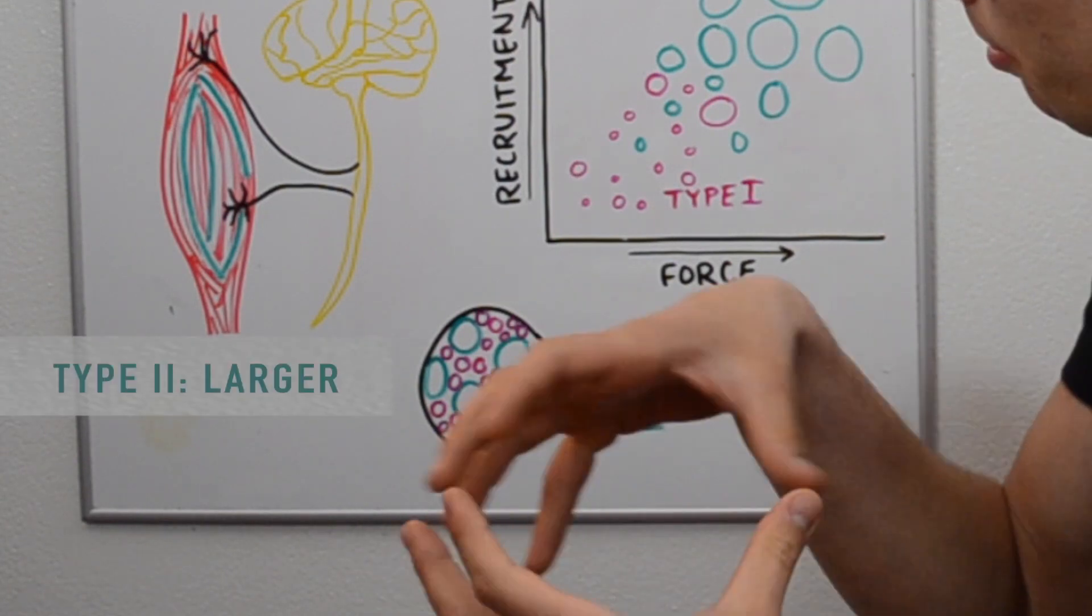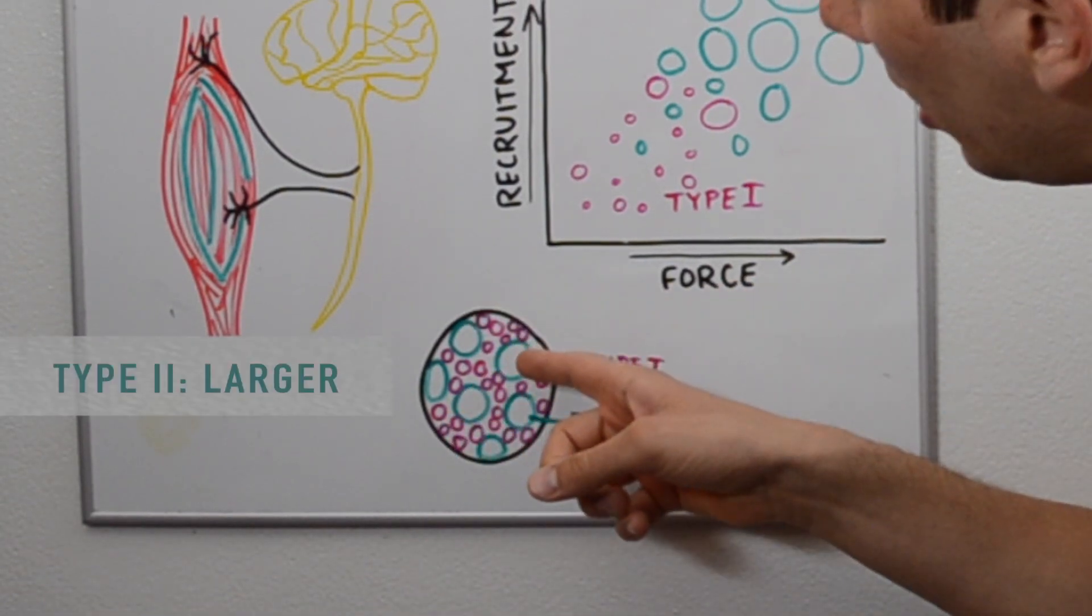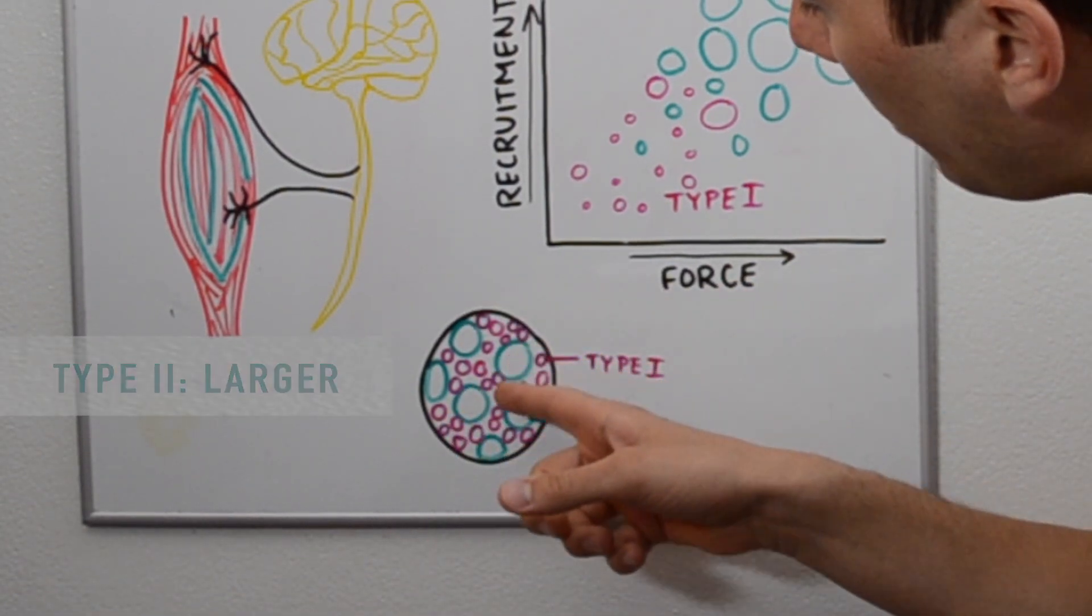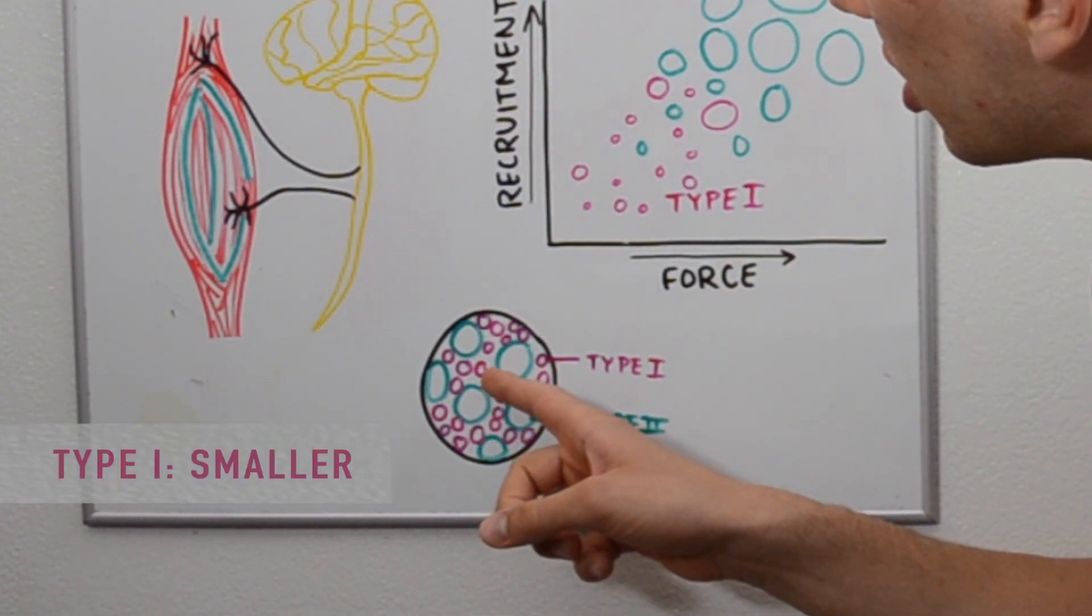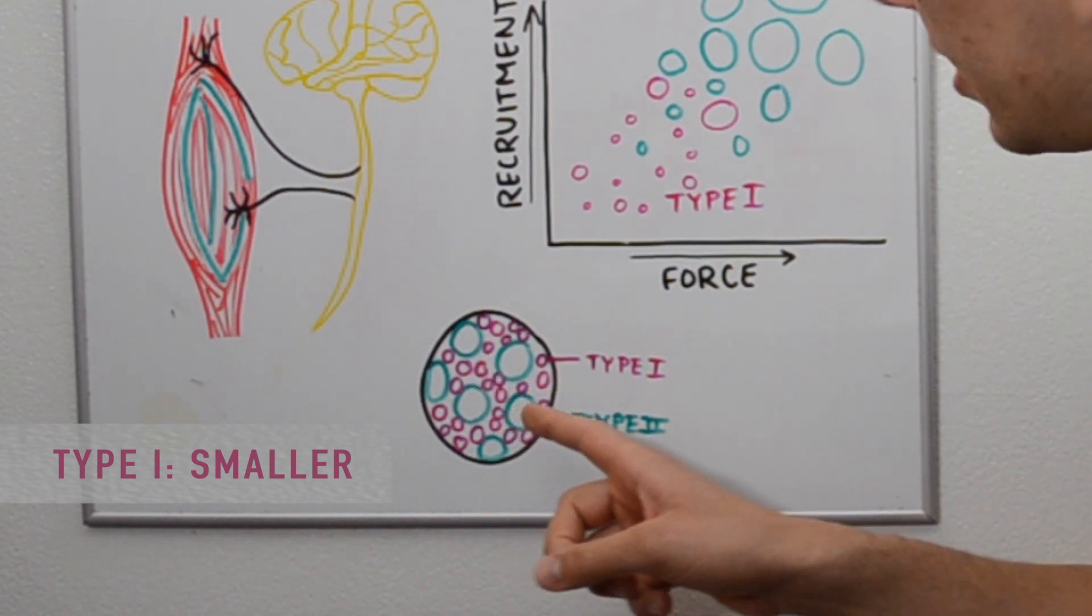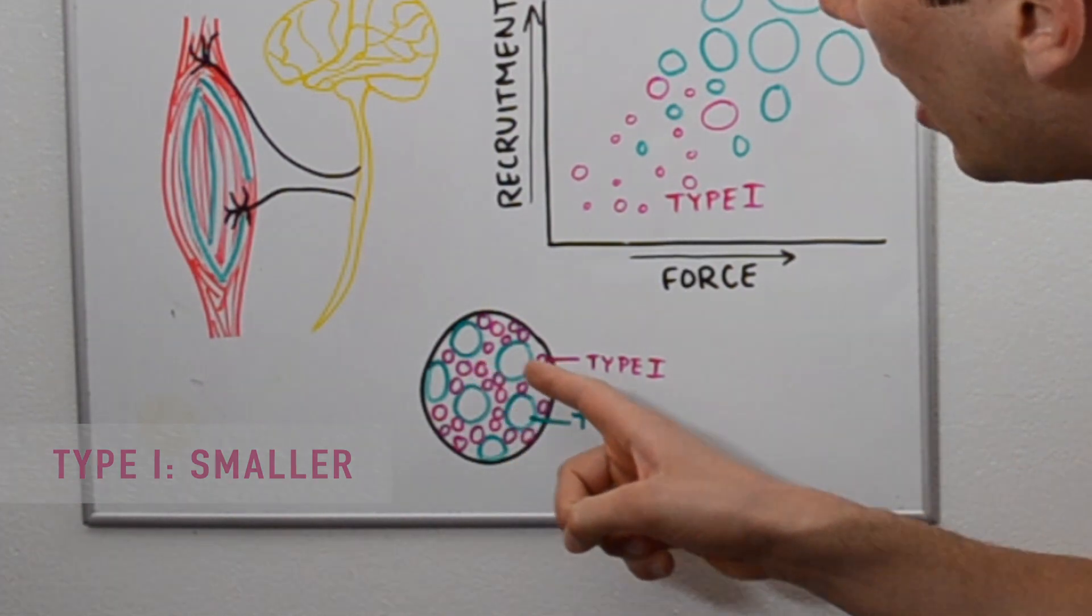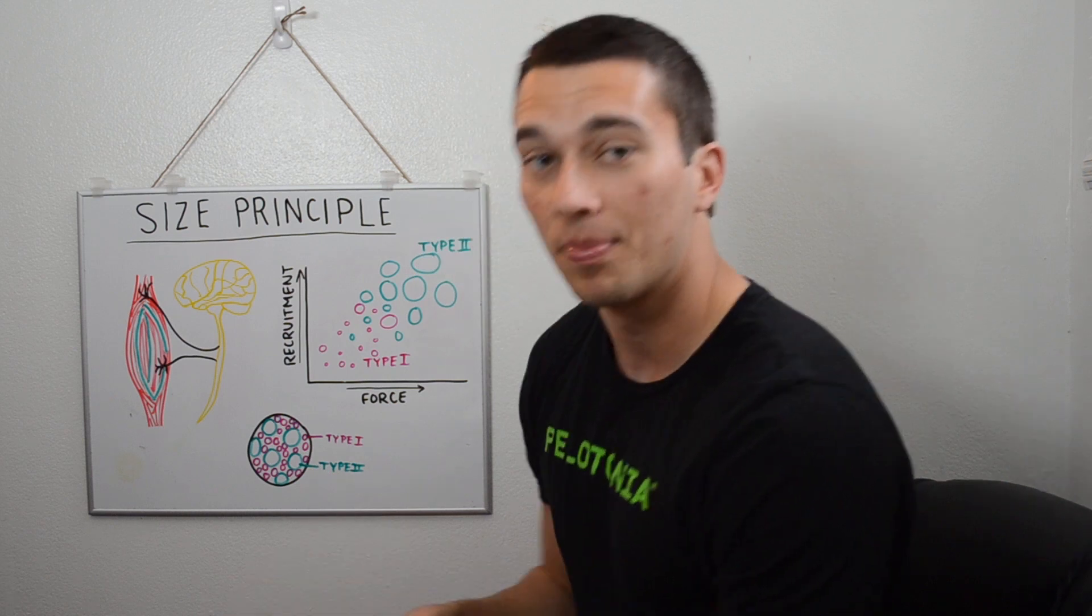Basically there are these larger motor units that encompass more fibers, so here might be like let's say a hundred fibers, where these smaller purple ones might have only 50 fibers in them. We call the smaller ones the type 1s, so those are represented in purple here.